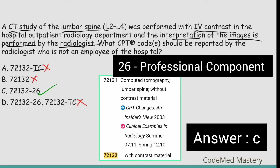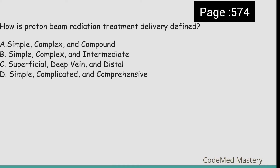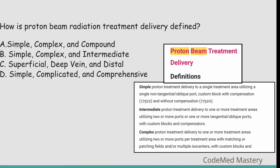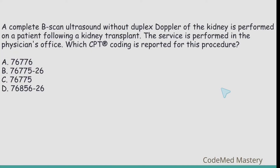Next question: How is proton beam radiation treatment delivery defined? Option A: simple, complex, compound. Option B: simple, complex, intermediate. Option C: superficial, deep vein, and distal. Option D: simple, complicated, comprehensive. In CPT manual radiology section, page 574, proton beam treatment delivery is defined as simple, intermediate, and complex. The right answer is option B.